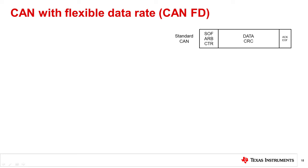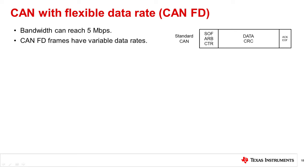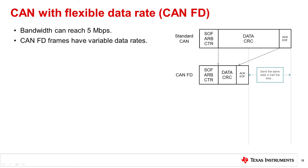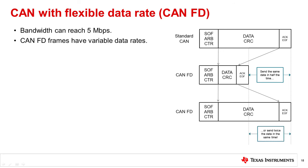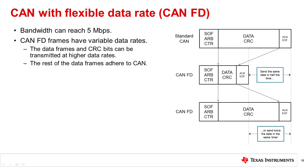CAN with flexible data rate, known as CAN FD, is an enhancement to the traditional CAN protocol. CAN FD allows for usable bandwidths of up to 5 megabits per second. As implied by the name, this protocol implements variable data rates within an individual message. Using this method, you can send the same amount of data in half the original time, or alternatively, send twice the amount of data in the same original time. This is possible because the data fields and CRC bits can be transmitted at higher data rates, while the rest of the fields adhere to traditional CAN speeds, leading to varying data rates within the same message.